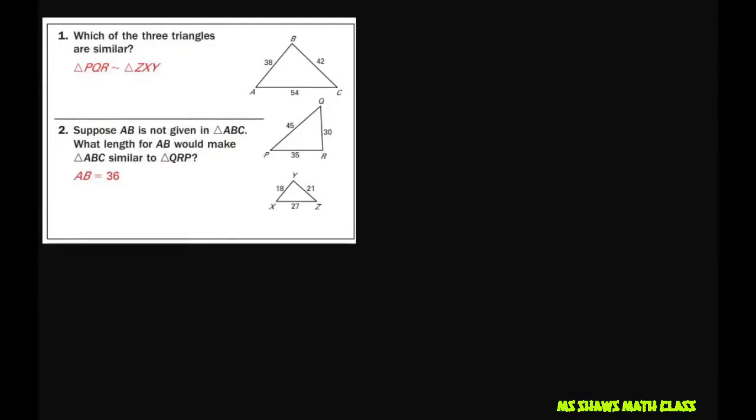It says which of the three triangles are similar. So you have to set up all proportions. We have PQ to ZX, so PQ is 45 and ZX is 27. Divide, reduce these both by 9. 45 divided by 9 is 5, and 27 divided by 9 is 3.